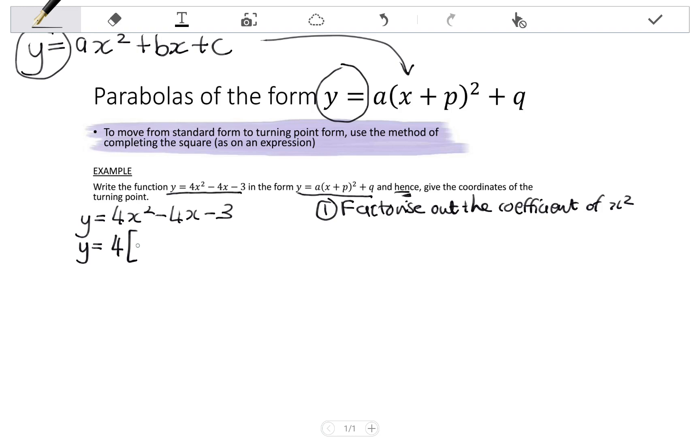So 4x squared without the 4 is x squared. Negative 4x taking out the 4 is negative x. Negative 3 divided by 4 is negative 3 over 4, and I close my bracket.